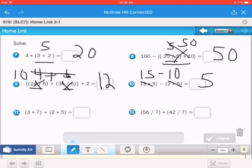Number 11. We have 3 times 7. That is 21. And then we have 2 times 5, which would give us 10. 21 plus 10. We get an answer of 21 plus 10 is 31.